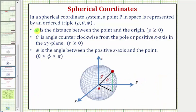Rho is the distance between the point and the origin. Theta is the angle counterclockwise from the positive x-axis in the xy plane. And finally, phi is the angle between the positive z-axis and the point.